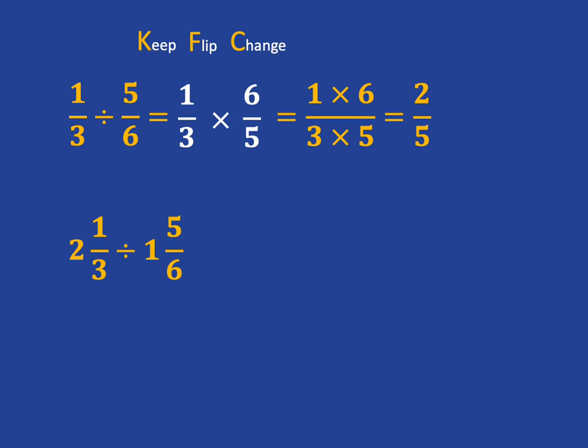So if we have mixed numbers, there's no problem. We just do exactly what we did with multiplication, and we first turn them into improper fractions, and then we've got the same process. We keep the first fraction the same, we flip the second fraction, and we change to multiplication, and we get our answer as we always have done.